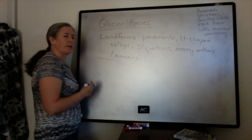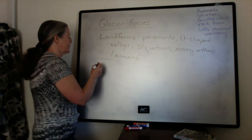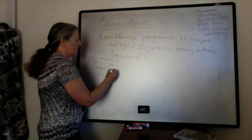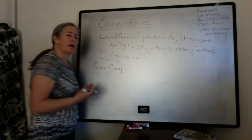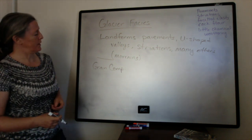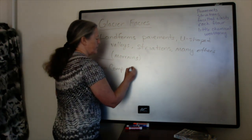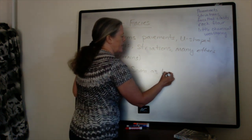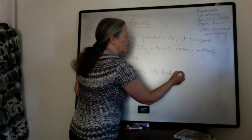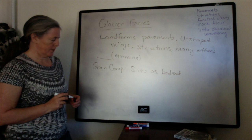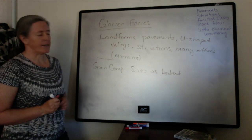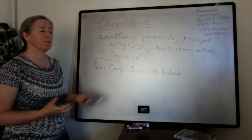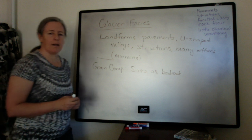We're going to talk about the grains and how they're arranged, starting with grain composition. Because physical weathering is more abundant than chemical weathering, the composition is basically the same as the bedrock that's eroded by the glacier. For example, if the glaciers are eroding granites, most of the grains will have a granite composition. If it's eroding carbonates, most of the grains will have a carbonate composition.